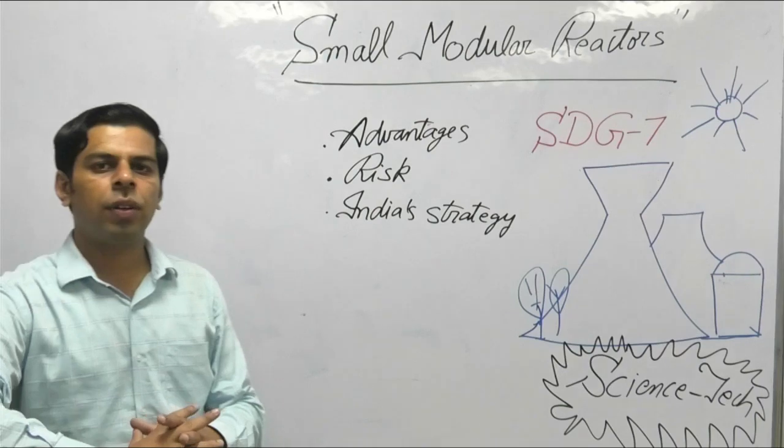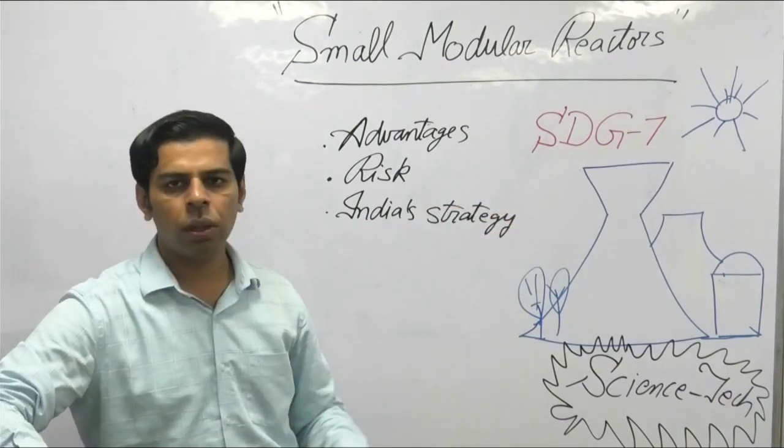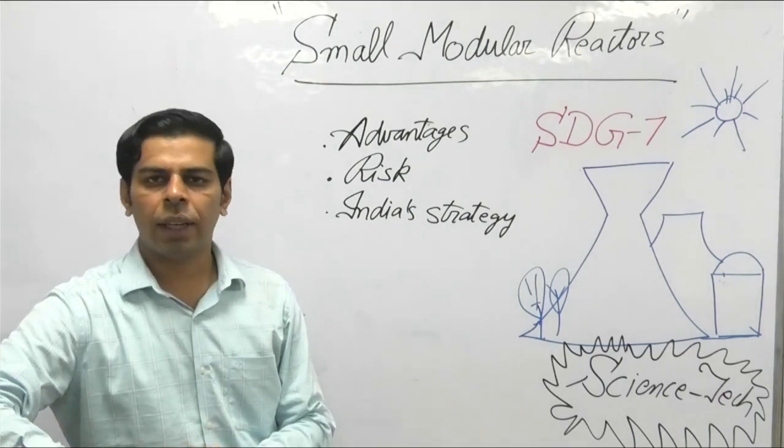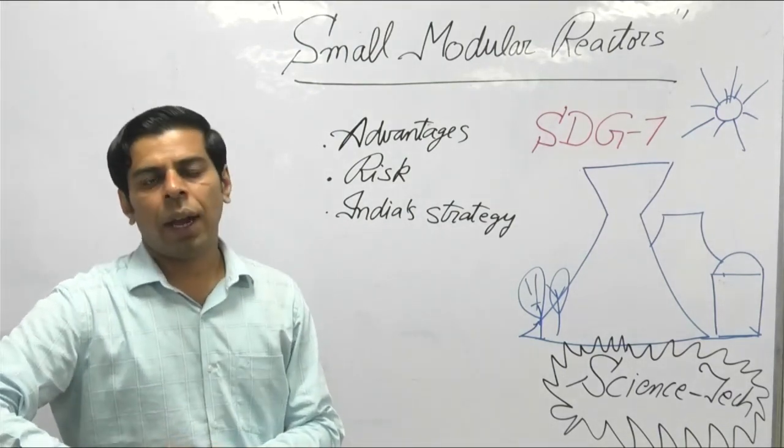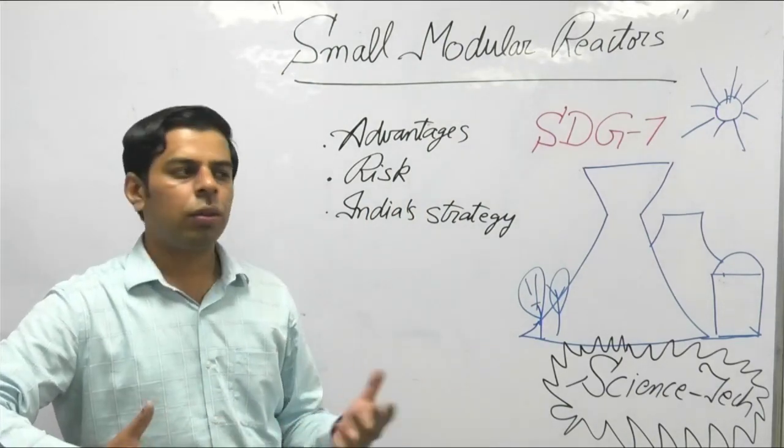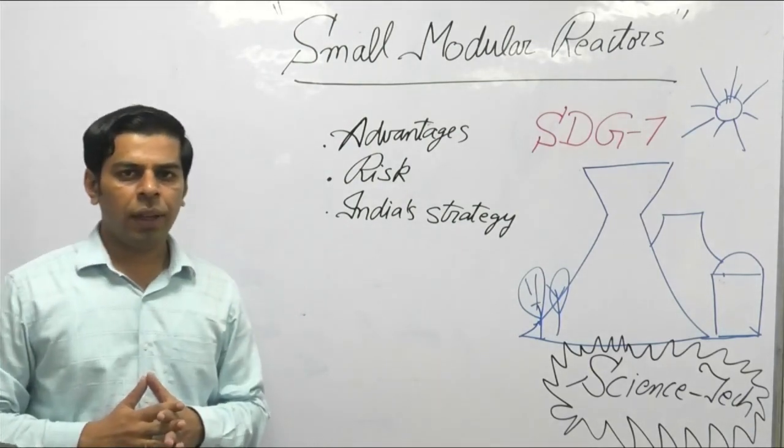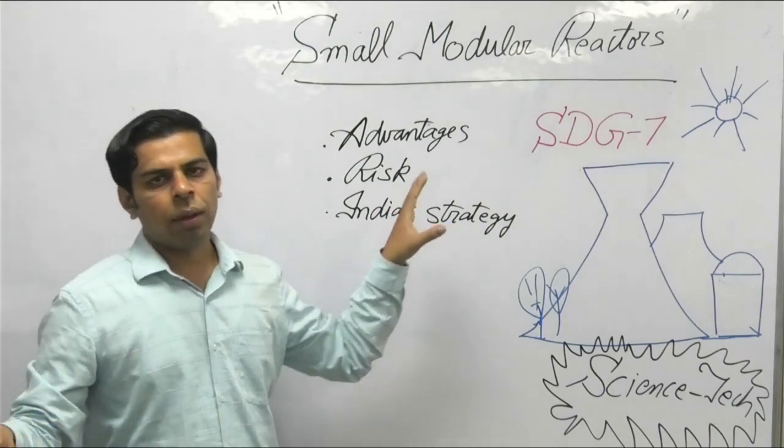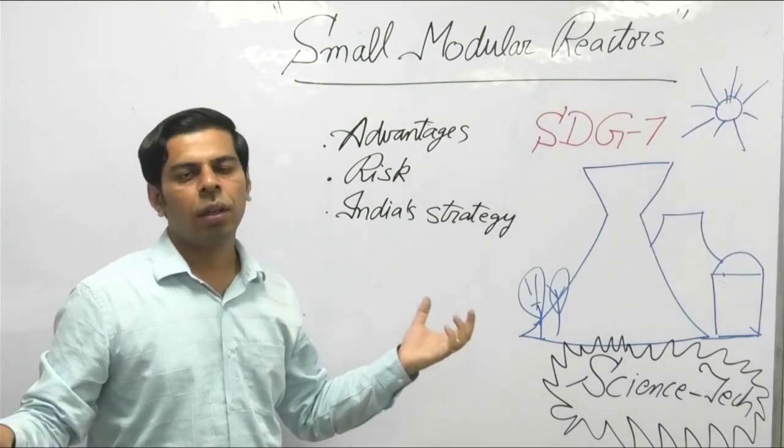Sustainable Development Goal 7 clearly caters to universal access to energy, as there are pockets still not getting 24/7 power supply. In the background of the Paris Agreement, there is a push to decarbonize the economy. Nuclear energy comparatively does not contribute to any direct emissions and is touted as one of the solutions for clean energy for countries which have declared bold nationally determined contributions and voluntary pledges.